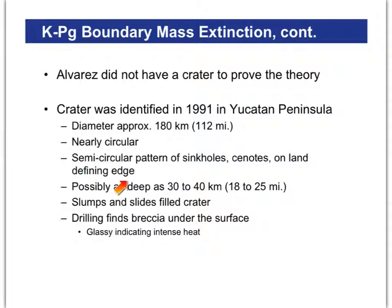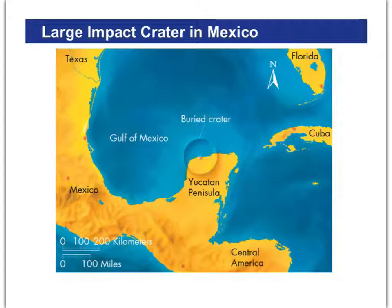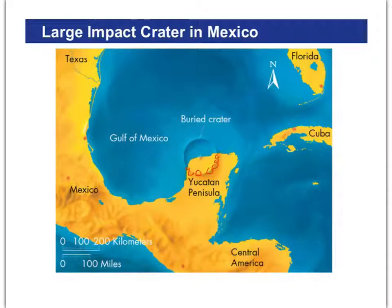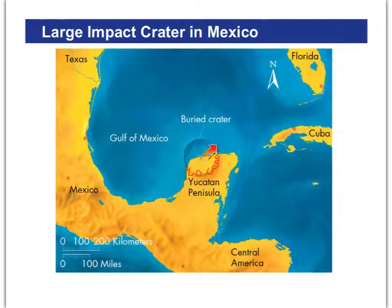Interestingly, on the land edge of the crater there are all kinds of sinkholes. In fact, there are many places on the Yucatan Peninsula in Mexico where you can do underground caving and snorkeling underground — it's really all along the rim of this crater. The rest of it is out in the Gulf of Mexico, but this whole thing was buried under many layers of sediment, hidden until it was discovered in 1991. The diameter is 180 kilometers — 112 miles across. That's like from here to almost the Jersey Shore. And it may be as deep as 25 miles. A huge hole knocked into the side of the Earth.